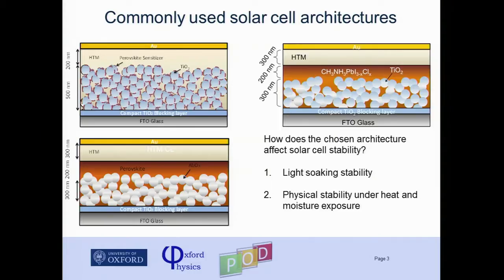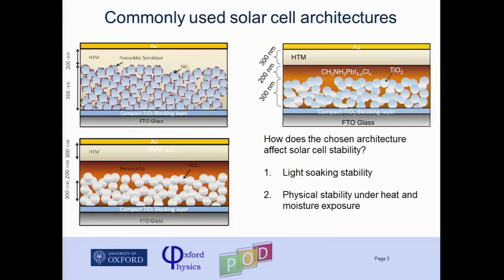The first architecture I'll be talking about is based on the dye-sensitized sort of structure. Essentially, what we've done here is replaced the dye in the dye-sensitized solar cell with the perovskite absorber. Crucially, the perovskite is not continuous along this mesoporous TiO2 film, so it acts just as a sensitizer. The perovskite is photoexcited, you generate electrons which are injected into TiO2, and holes are transported through an organic hole transporter up to the cathode. If we take this structure one step further, which happened a few months after this initial report...